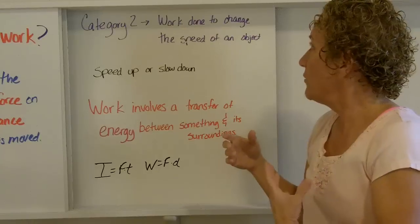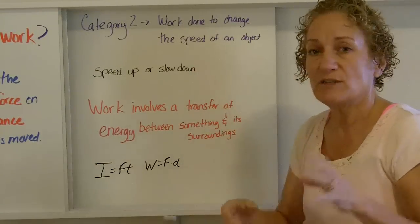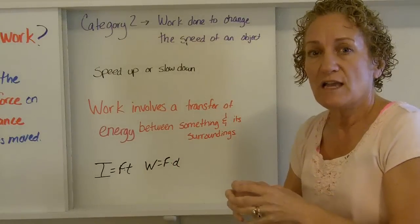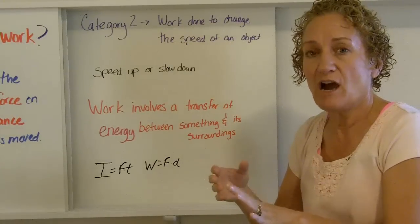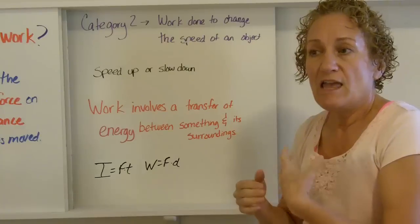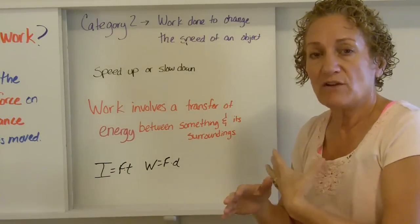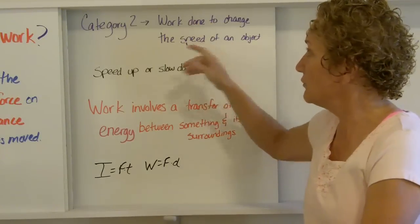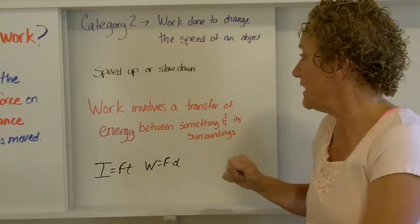Second category is work done to change the speed of an object. If you're changing the speed of an object, either slowing things down or speeding things up, you're doing work. If you're speeding down the freeway and you hit the brakes to stop the car, the brakes are actually doing work on the car. If you're getting onto the freeway and you need to speed up and you press the accelerator, then you're speeding up and that is also work being done. So those are the two categories.